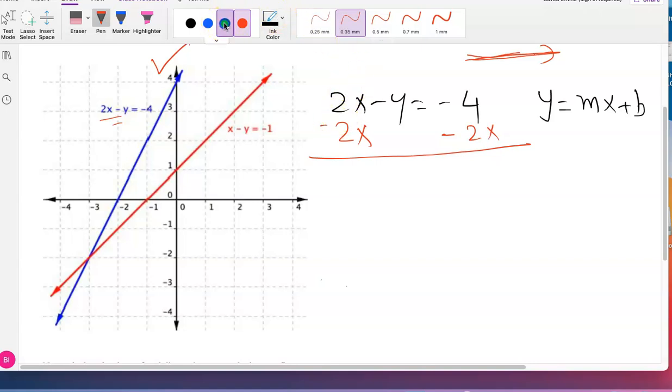So negative 2x and positive 2x cancel. You got negative y equals negative 2x minus 4. And you ended up getting a negative y. I am looking for a positive y, so just multiply the whole expression by negative 1. Negative times negative is positive y. y equals negative 1 times negative 2 gives you positive 2x, and again positive 4.